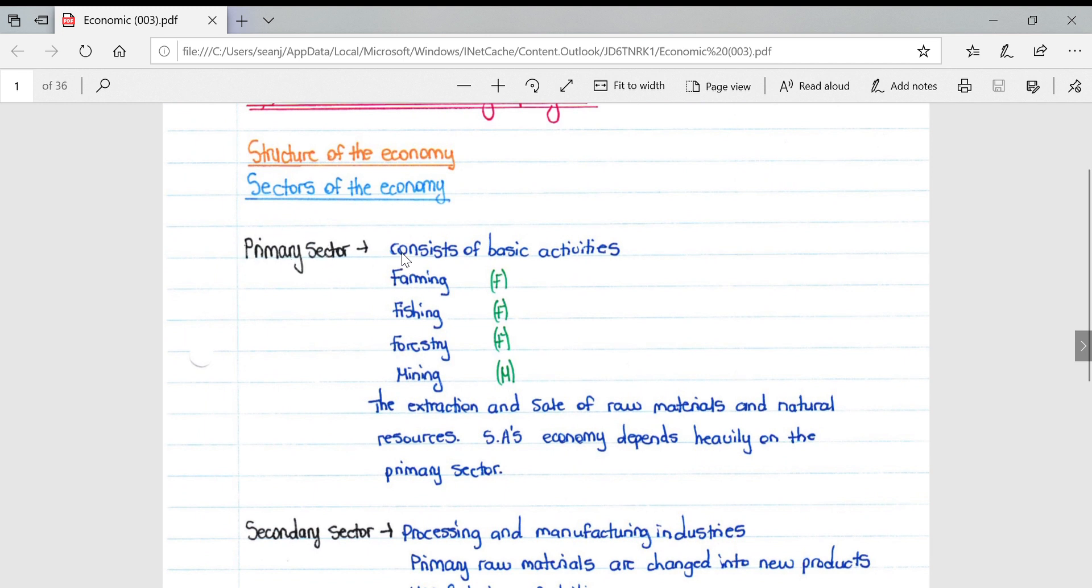When we talk about the primary sector, we talk about four basic activities: farming, fishing, forestry, and mining. An easy way to remember them is triple F-M. The extraction and sale of raw materials and natural resources is the definition of the primary sector.